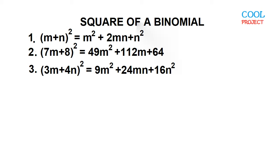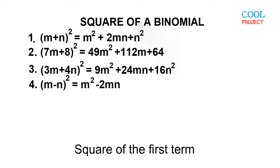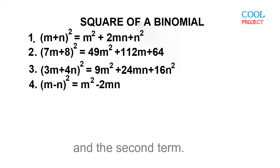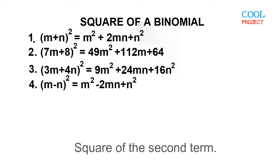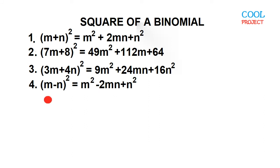Example number four: the square of the quantity M minus N. This is equal to M squared minus 2MN plus N squared. M times M is M squared. M times negative N is negative MN times 2 is negative 2MN. Negative N times negative N is N squared.